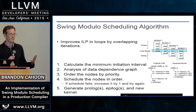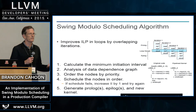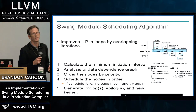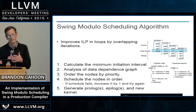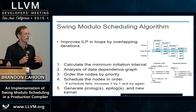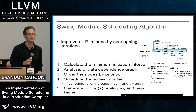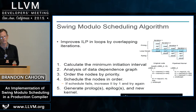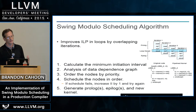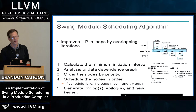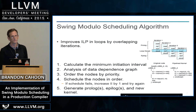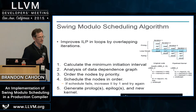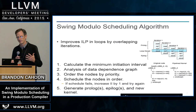In fact, people who use our compiler expect the compiler to do software pipelining, and when we didn't do software pipelining, they would actually change the C source to try to do it in the C programs themselves — so that was a bad idea. So we decided to implement software pipelining, and we chose to do swing modulo scheduling, because that's what everybody does when they do software pipelining these days.